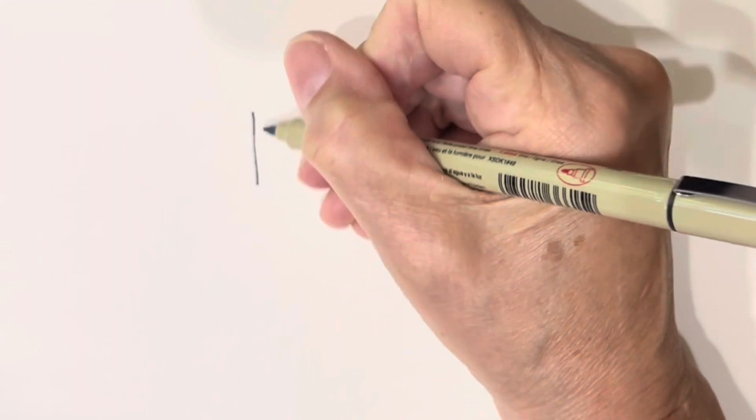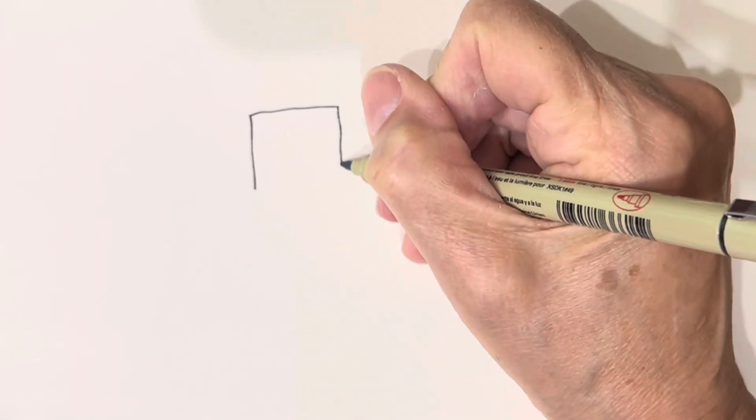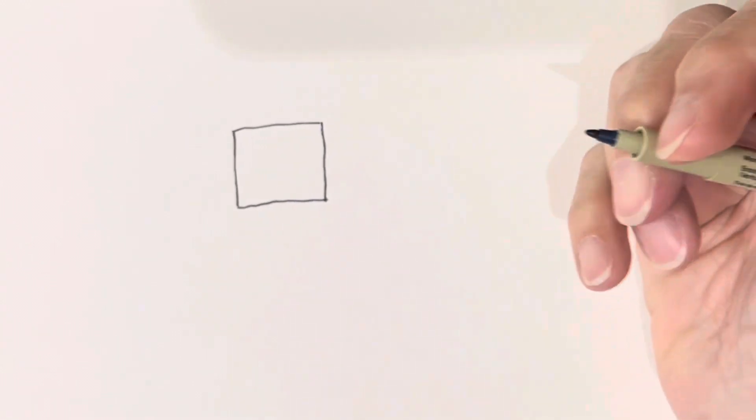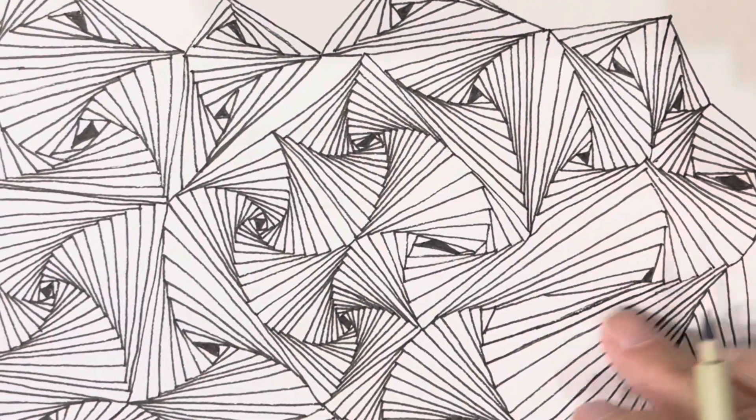All right, you start off and just draw a square. You can use a ruler if you want to, but it doesn't really matter because keep in mind that when your whole picture is done, even if there are imperfections...